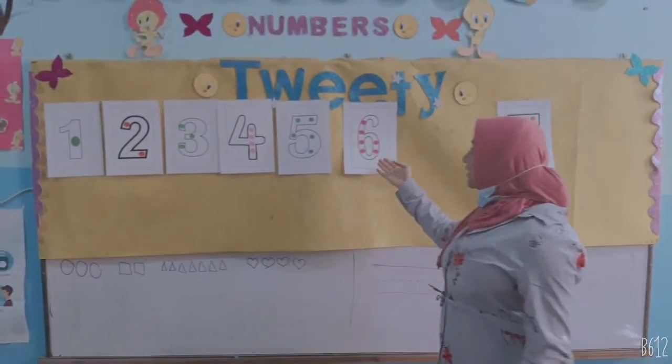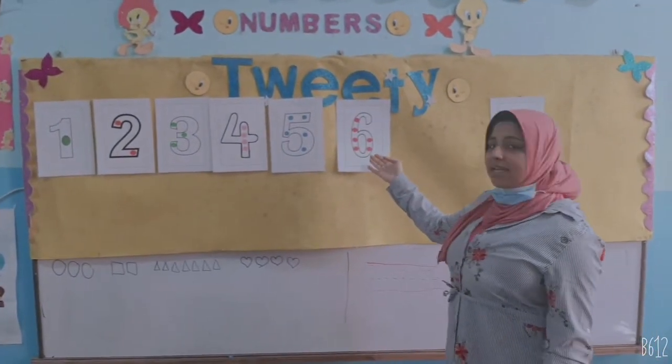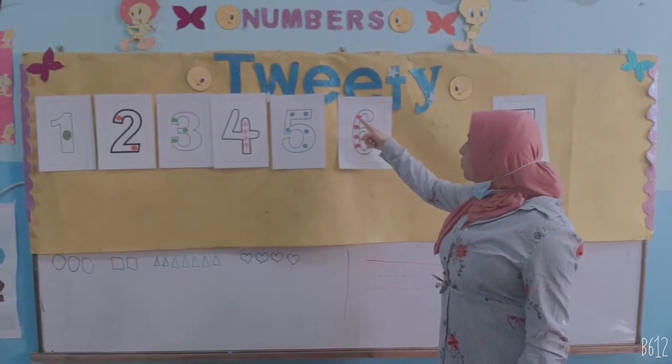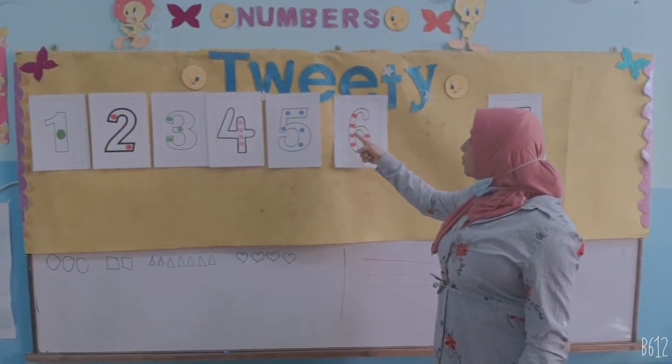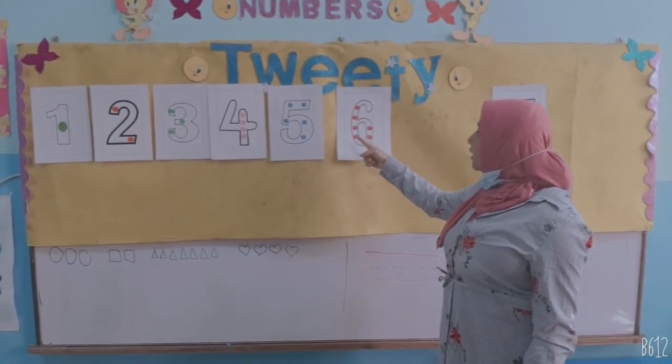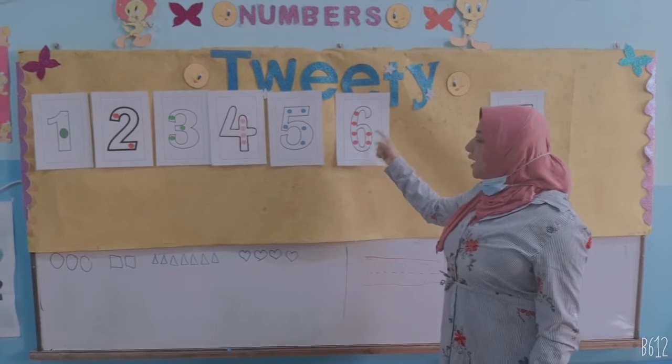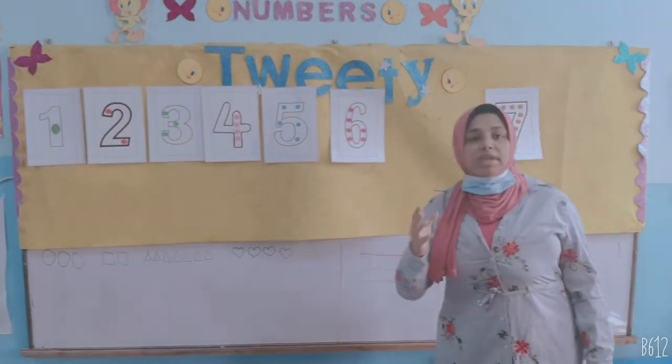What is number? 6. How many circles are there? 1, 2, 3, 4, 5, 6.